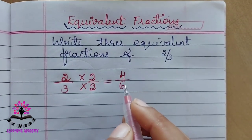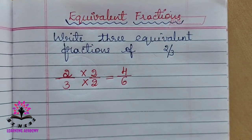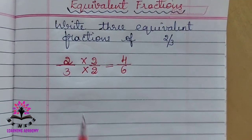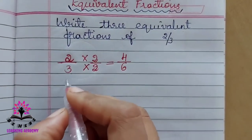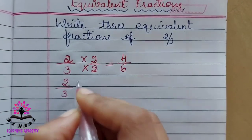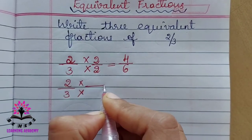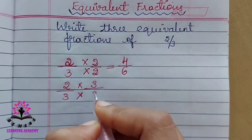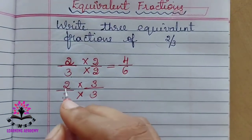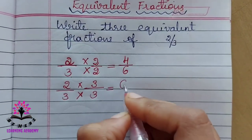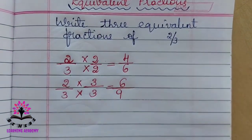Again, write 2/3 and multiply the numerator and the denominator by three. Here you have multiplied by two, and here you multiply by three. Two threes are six, three threes are nine. So the answer is 6/9.